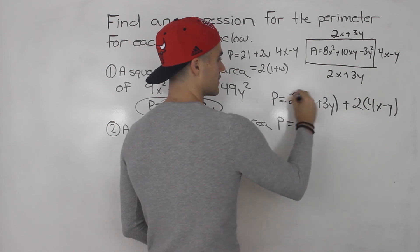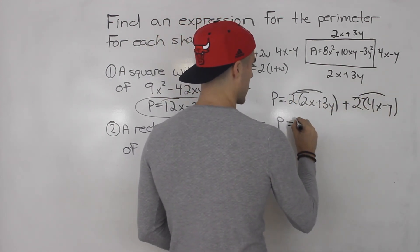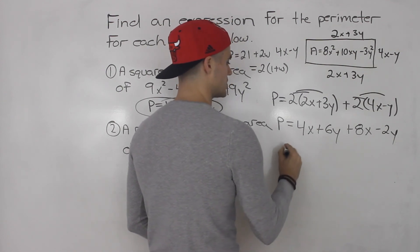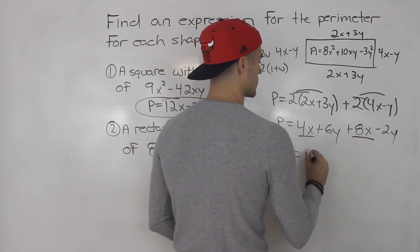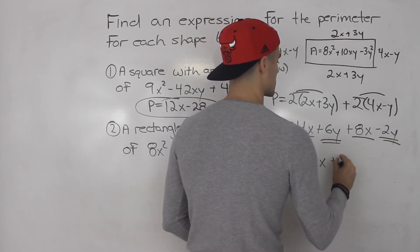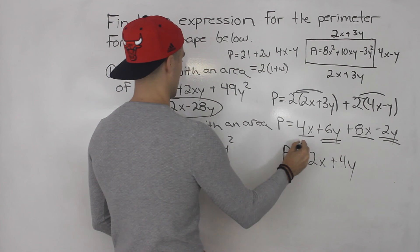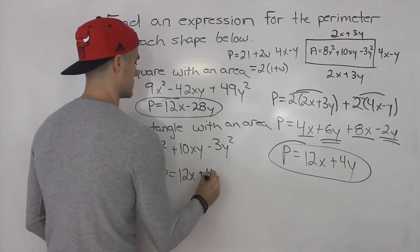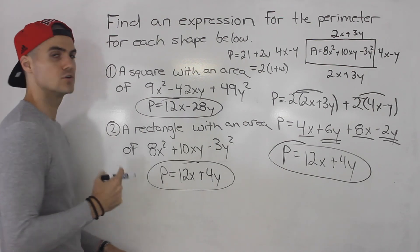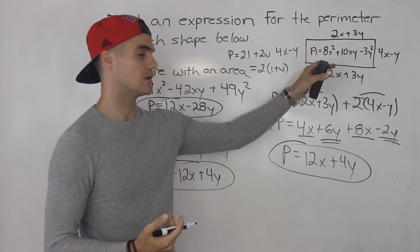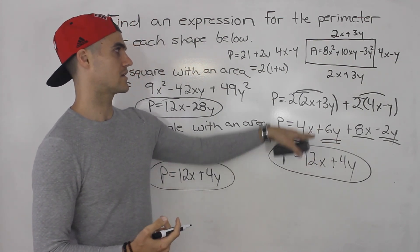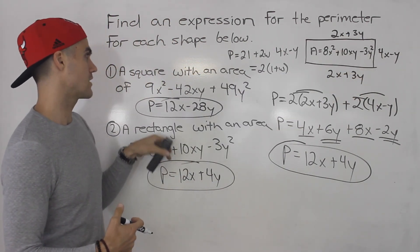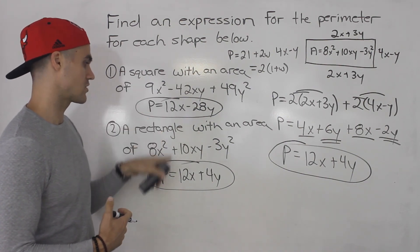Distributing: 2 times (2x plus 3y) gives 4x plus 6y, and 2 times (4x minus y) gives 8x minus 2y. Simplifying like terms: 4x plus 8x is 12x, and 6y minus 2y is 4y. So the perimeter of the rectangle is 12x plus 4y. Whenever you're given the area as an expression, factor it — the two resulting brackets are your length and width — then add up all four sides to get an expression for the perimeter.